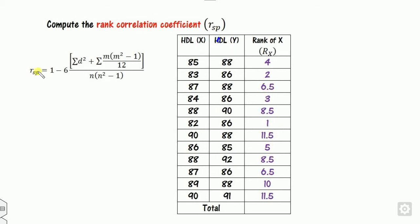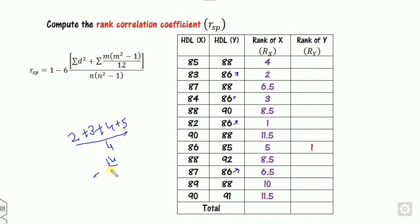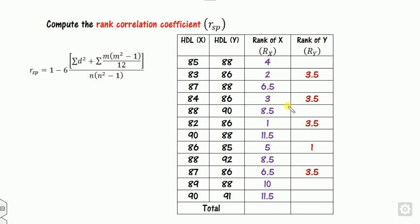Now do the same for y. The smallest number gets rank 1. The next smallest is 86, which appears four times, occupying positions 2, 3, 4, and 5. Take the average: (2+3+4+5)/4 = 14/4 = 3.5. Assign 3.5 to each of the four occurrences of 86.